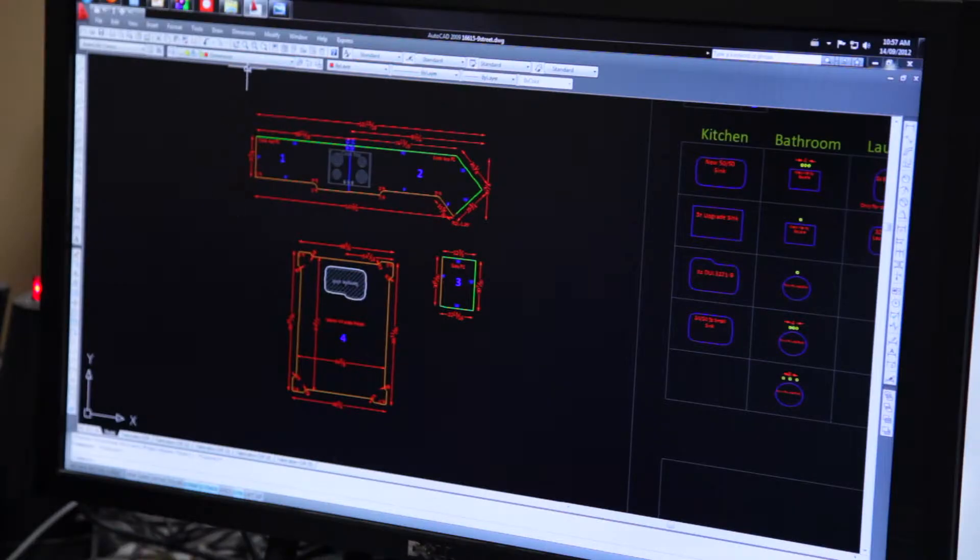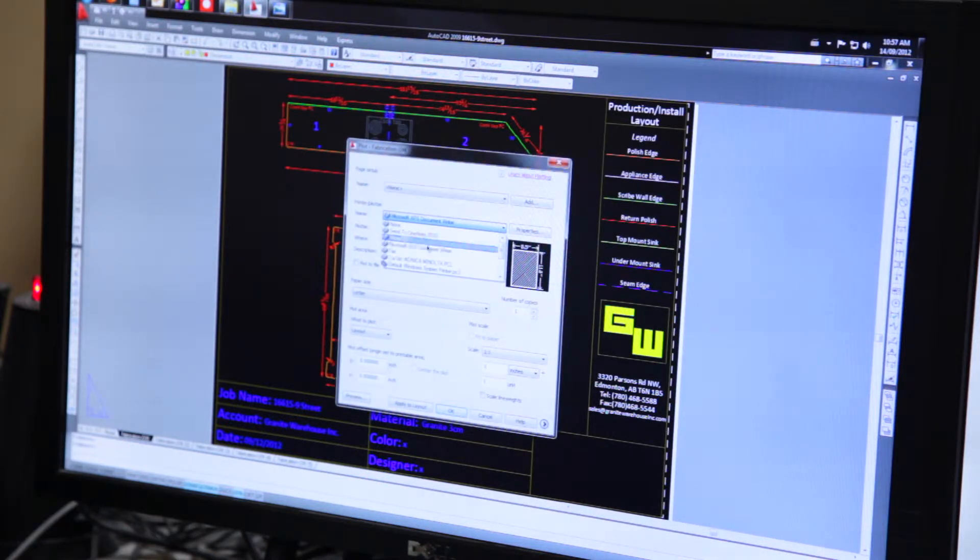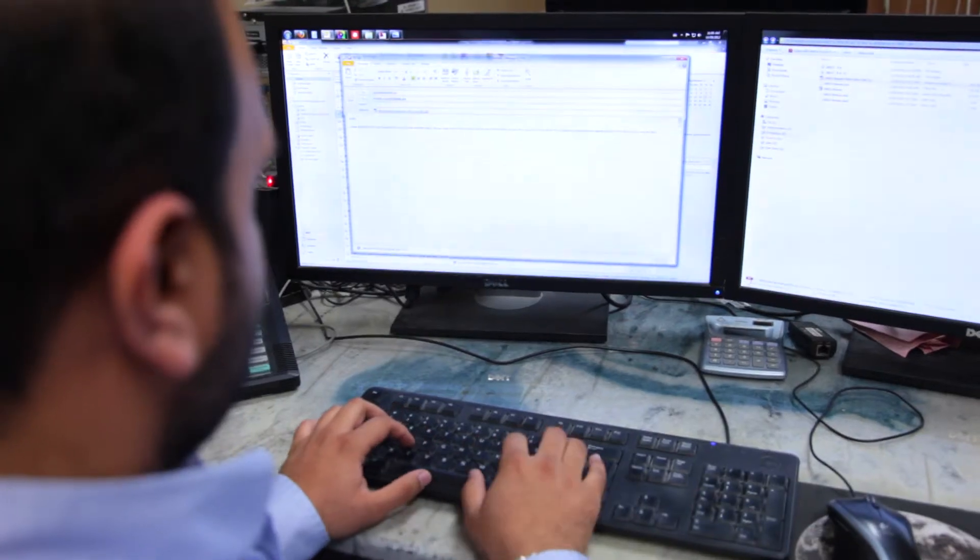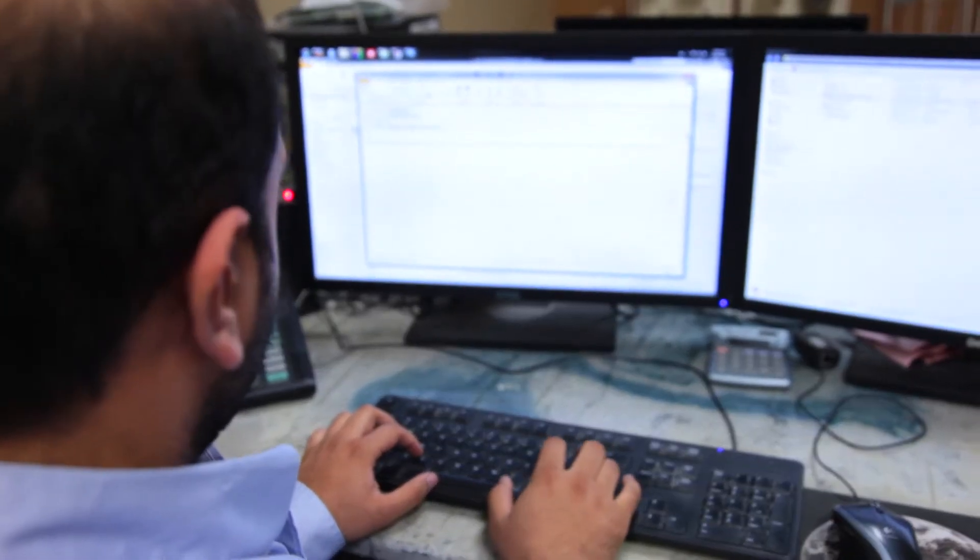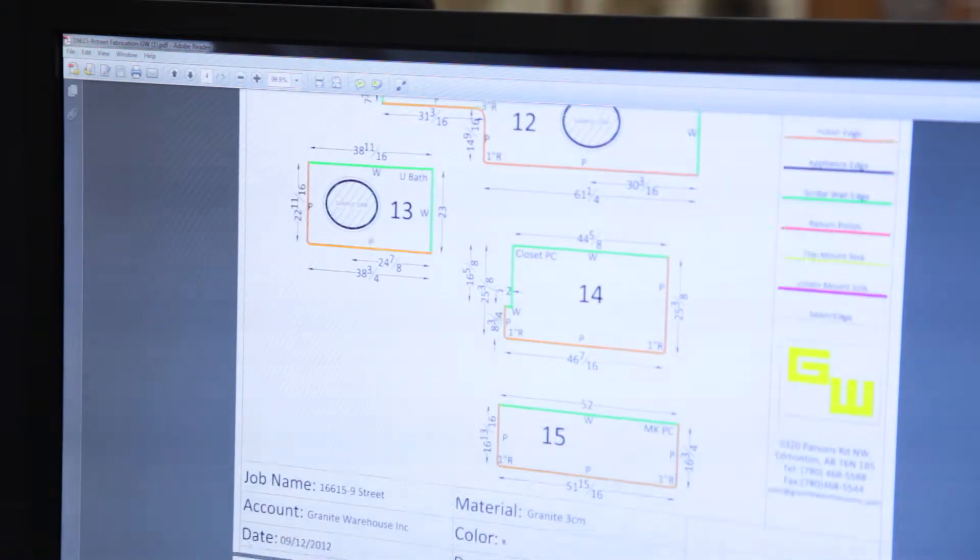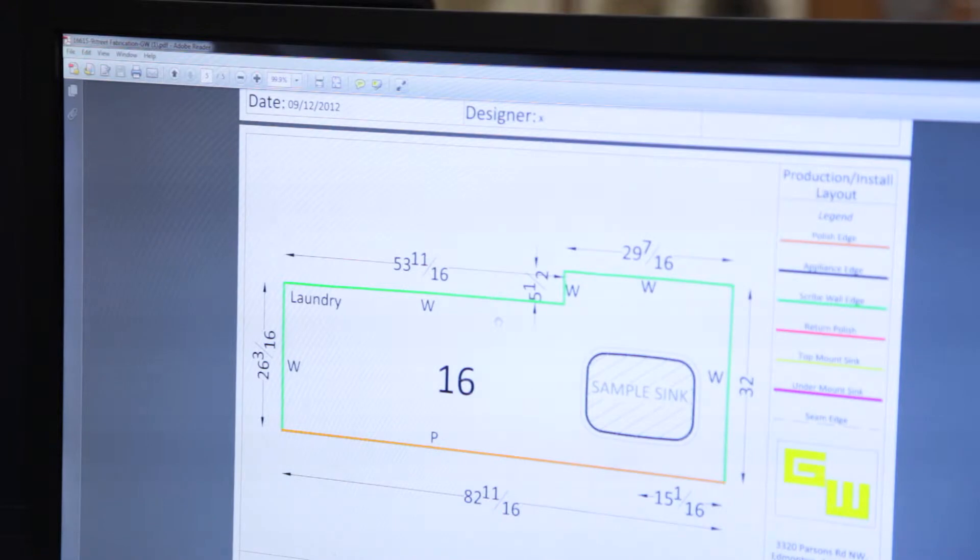Once all the CAD is ready, we make a CAD layout into a PDF format and send it to the customer for approval. That drawing shows all the walls, all the profiles, all the stove appliances and it's all color coded and symbolized so the client, it's a user-friendly drawing, the client can understand properly.